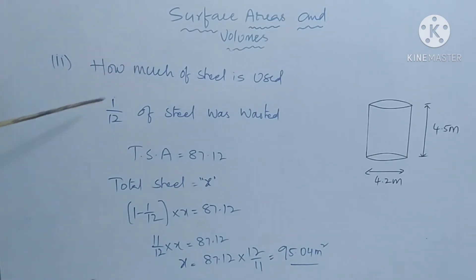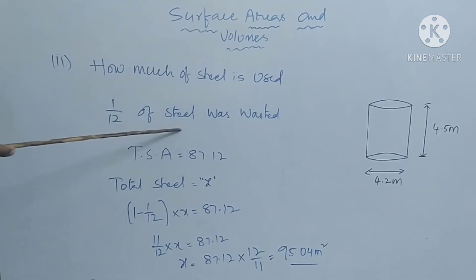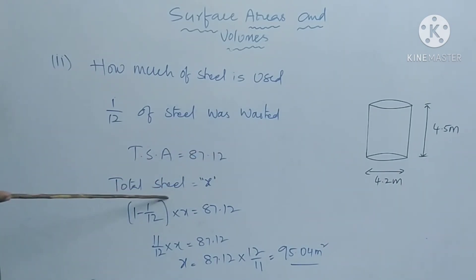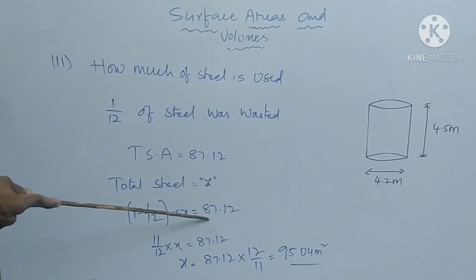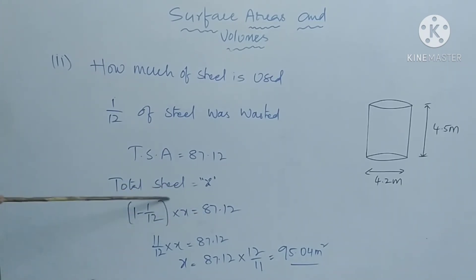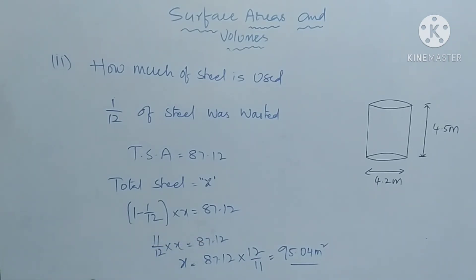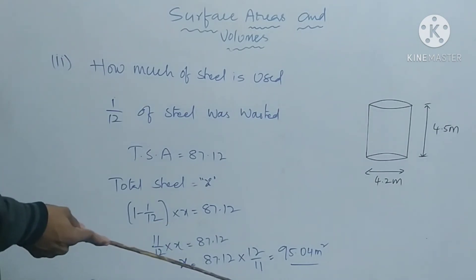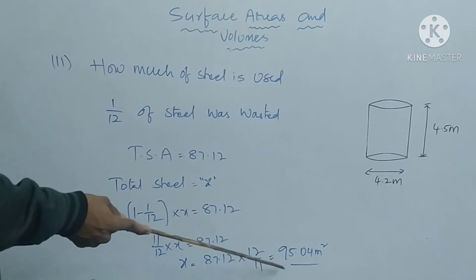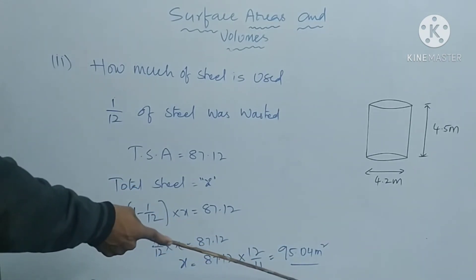Part two: how much steel sheet was actually used if 1 by 12 of the sheet was wasted in making the tank? Total surface area is 87.12 m². Let total sheet be x. Since 1 by 12 is wasted, the used portion is (1 minus 1 by 12) into x = 87.12, giving 11 by 12 into x = 87.12. So x equals 87.12 into 12 by 11 = 95.04 meter square.